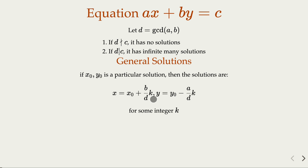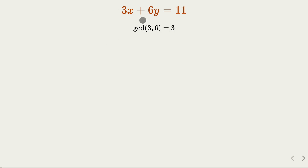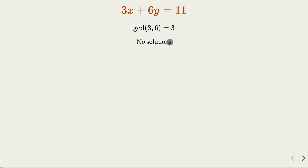We won't use a full example here, but we can illustrate why. For example, if the GCD is 3 but the right-hand side is not a multiple of 3, then of course it has no solutions. It's easy to understand because any x and y will give a multiple of 3, and 11 is not a multiple of 3. On the other hand, if 3 and 5 are co-prime, then we have infinitely many solutions.